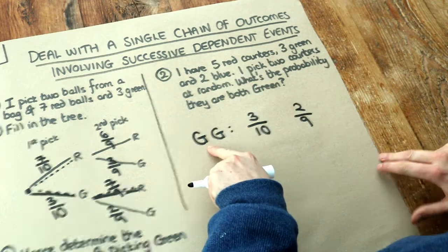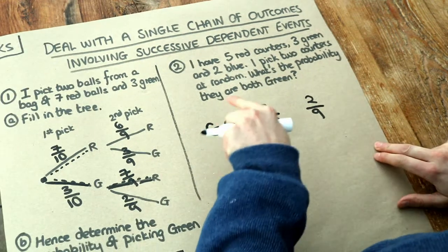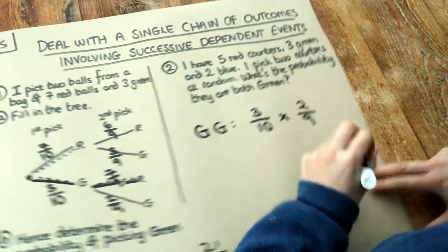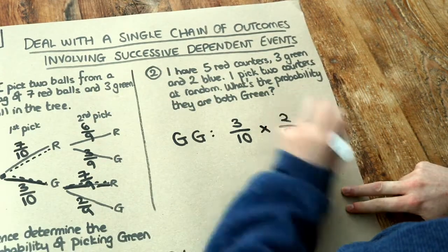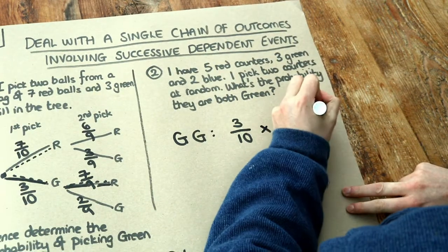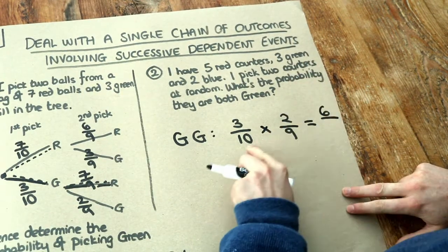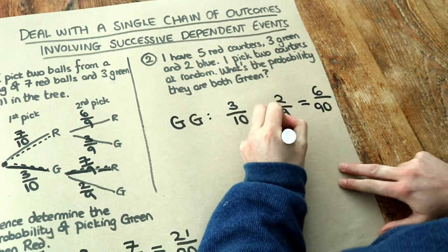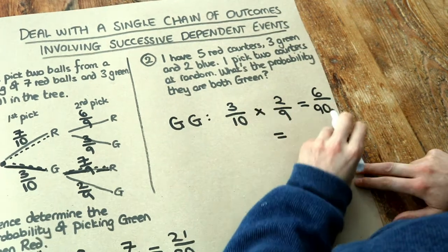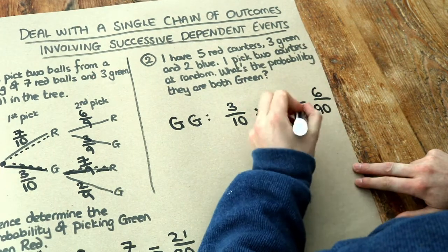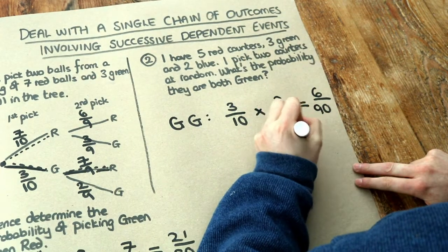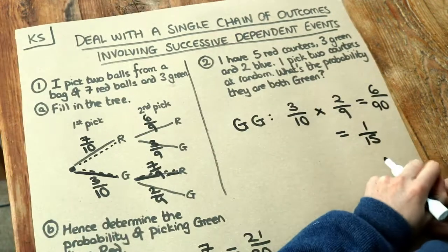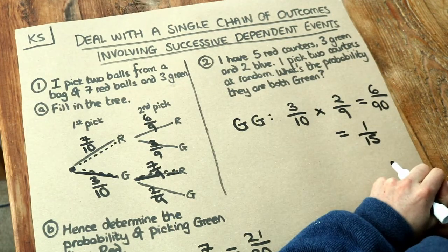The probability that the first is green AND the second is green — using 'and' means we multiply. Three times two is six, ten times nine is ninety. Simplifying: ninety divided by six is fifteen, so the answer is one out of fifteen.